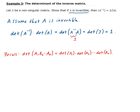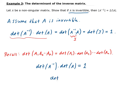Therefore, we have that the determinant of A inverse times the determinant of A is equal to one. So the determinant of A inverse times the determinant of A equals one, which is equivalent to the determinant of A inverse being equal to 1 over the determinant of A. And that is the same as our result — we proved our result.